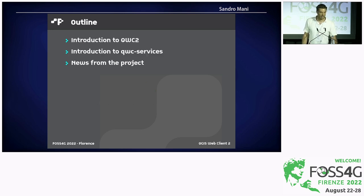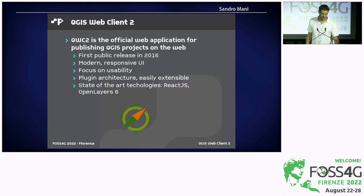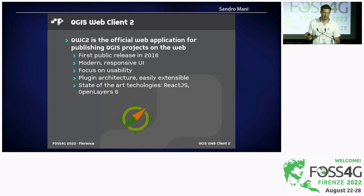The outline: I'm going to give an introduction to QWC2, the QGIS Web Client, to QWC services, and then give an overview of what's happened in the past year in the project. The QGIS Web Client 2 is the official web application for publishing QGIS projects on the web. It's hosted in the QGIS namespace on GitHub. The first public release was in 2016, with the goal of developing an application with a modern and responsive UI, focusing on usability, a plugin architecture for easy extensibility, and using state-of-the-art technologies like ReactJS and OpenLayers 6.